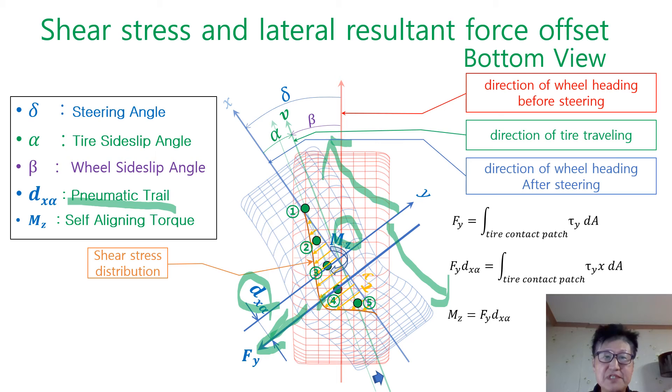About the vertical z axis, we define mz as self-aligning torque. This torque tries to turn the heading direction of the wheel limb to the direction of tire movement direction, in this direction. The resultant lateral reaction force can be calculated by the integral equation over the tire contact patch of shear stress tau sub y in infinitesimal area dA.